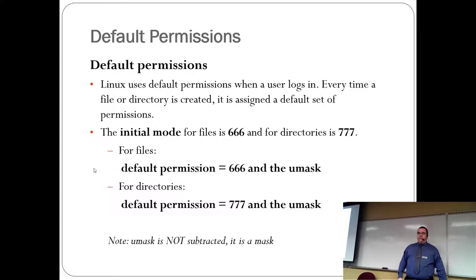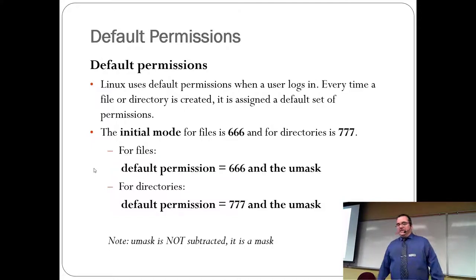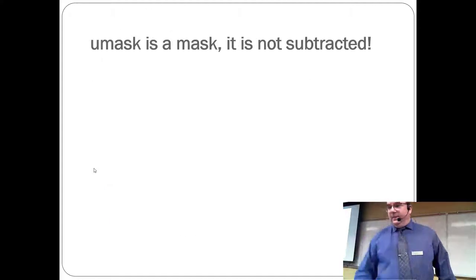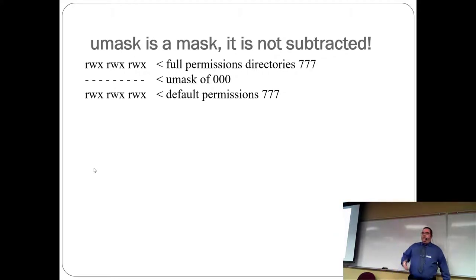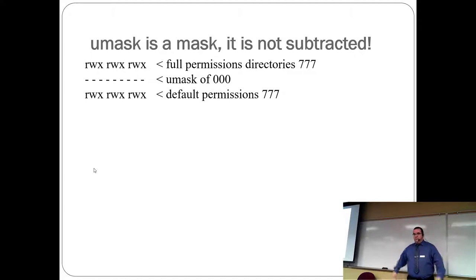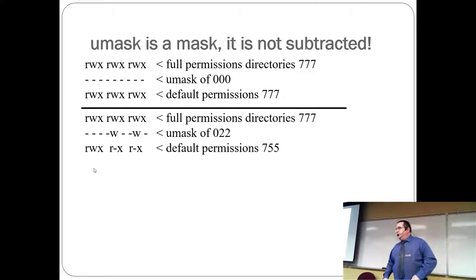There's something called umask. A lot of people say umask is not subtracted — it is a mask. It looks like subtraction and that's basically how you calculate it. Full permissions on a directory is 777. With a default umask of 000, the default permissions stay at 777. With a umask of 022, the default permissions become 755.